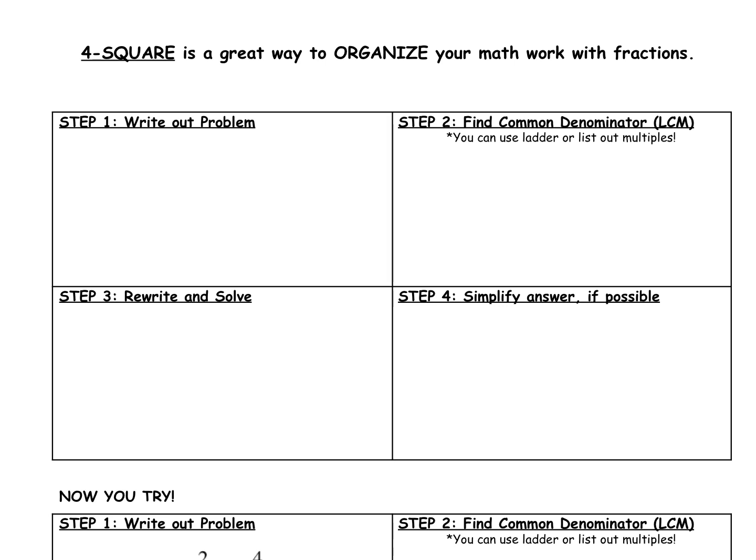Now flip to the back of your notes. We're going to take a look at foursquare, which is a tool to organize your math work with fractions. So in the first box, let's write this problem: one and five-sixths plus three-fourths. Step one is our main problem. Notice the six and the four do not have the same denominator. So for step two, we need to find a common denominator using the ladder method or listing out the multiples.